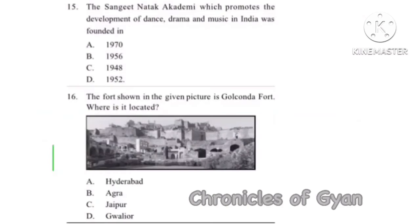Question 15: The Sangeet Natak Academy, which promotes the development of dance, drama, and music in India, was founded in which year? The Sangeet Natak Academy was founded in the year 1952 and is located in New Delhi. Option D, 1952.